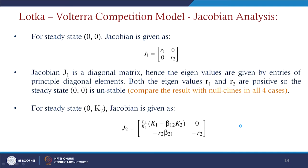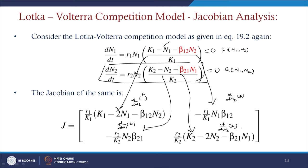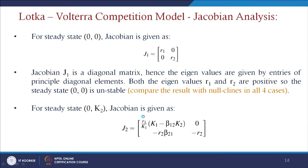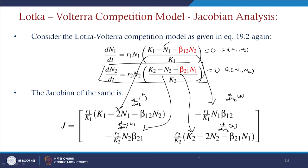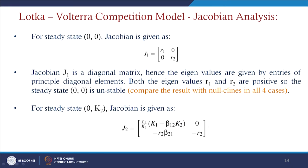At the steady state (0,0), substituting n1 = n2 = 0 into the Jacobian gives a diagonal matrix with entries R1 and R2. Since K1 cancels and n1, n2 are zero, we get R1 and R2 on the diagonal. The Jacobian J1 is a diagonal matrix with eigenvalues R1 and R2, both positive, so the steady state (0,0) is unstable.